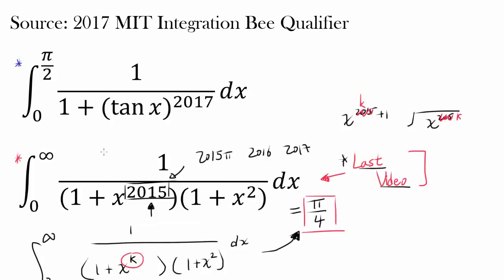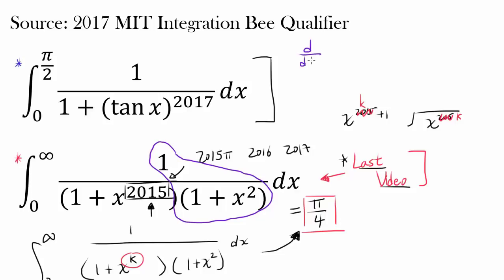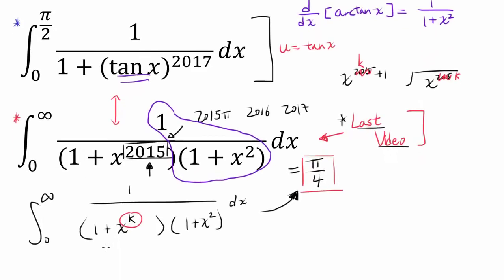Why am I mentioning what we examined in the last video when our integral looks very different? Or does it look different? Let's examine this integral closely. We have 1 over (1 + x²), and you may remember that when we differentiate arctan(x), we get 1 over (1 + x²). We have something related to that right here. So why don't we try the substitution u = tan(x) and see how these two integrals are related? As we are about to find out, the relationship is very intimate.